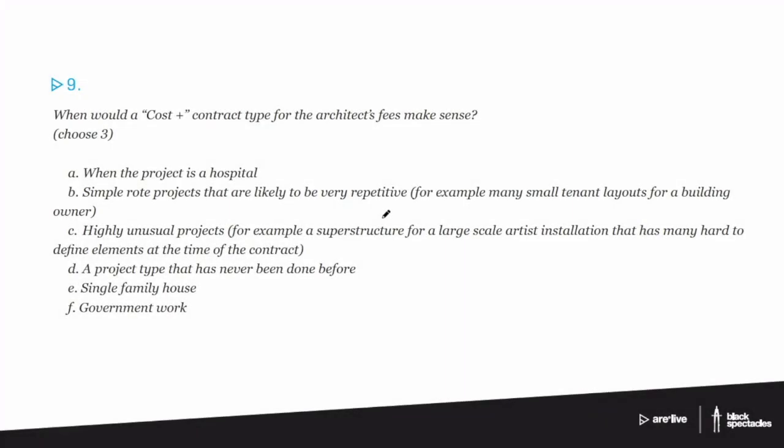When would a cost plus contract type for the architect's fees make sense? Choose three. The choices are: A) when the project is a hospital, and B) simple rote projects that are likely to be very repetitive — for example, small tenant layouts for a building owner, some building that has many tenants in it and they change over a lot.